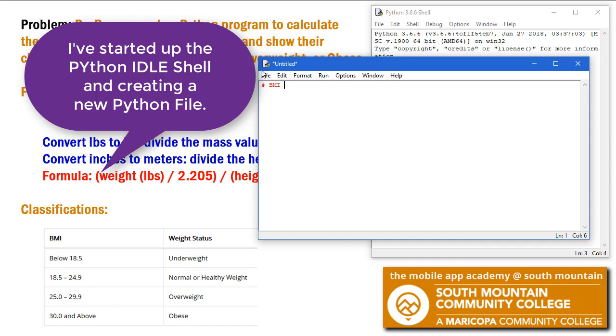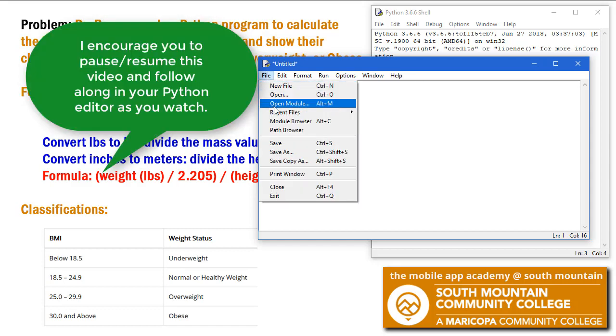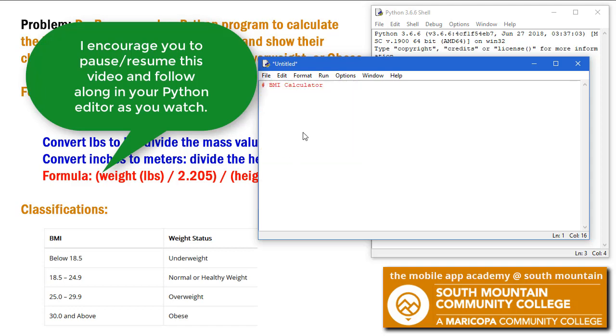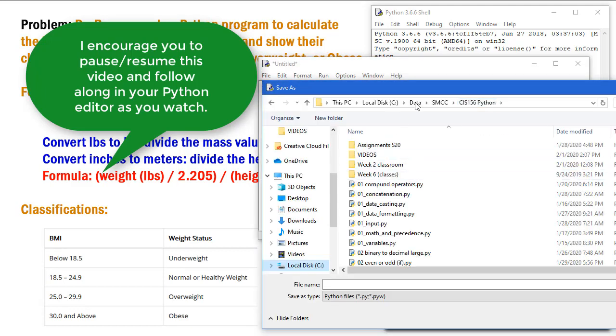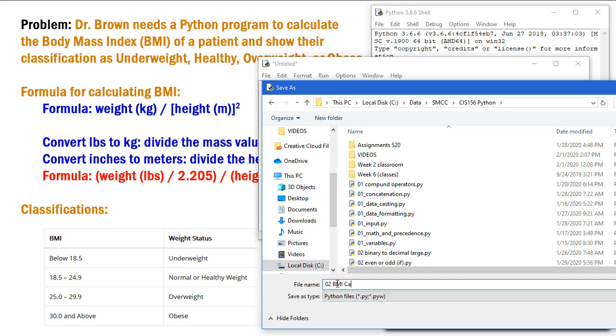And I'll put a comment here to BMI calculator. I'm going to go ahead and save this. So we'll save this as. I'm going to save this into my Python folder. I'm going to name this O2 since we're in Unit 2 BMI calculator.